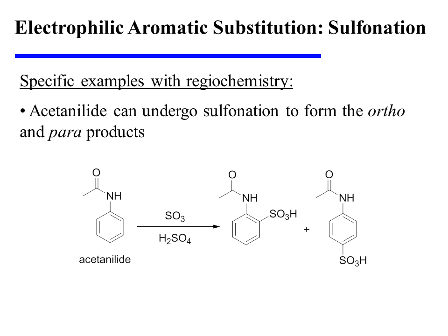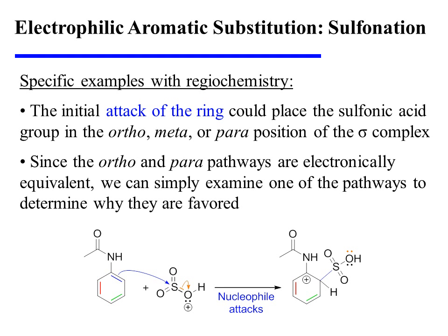Now let's turn our attention to some specific examples with regiochemical considerations. For instance, acetanilide can undergo sulfonation to form the ortho and para products. The initial attack of the ring on the potent electrophile could place the sulfonic acid group in the ortho, meta, or para position of the sigma complex.